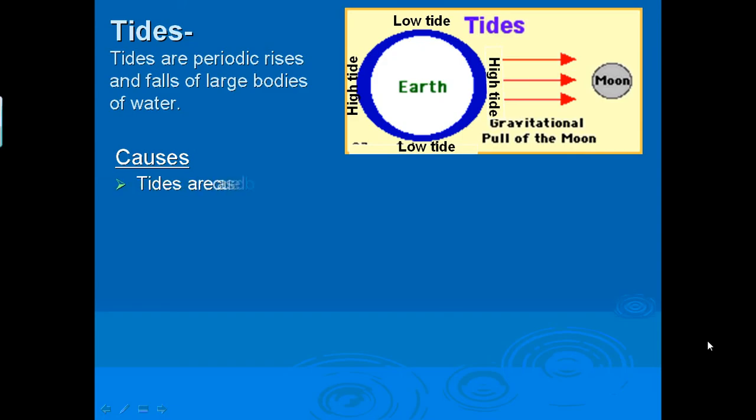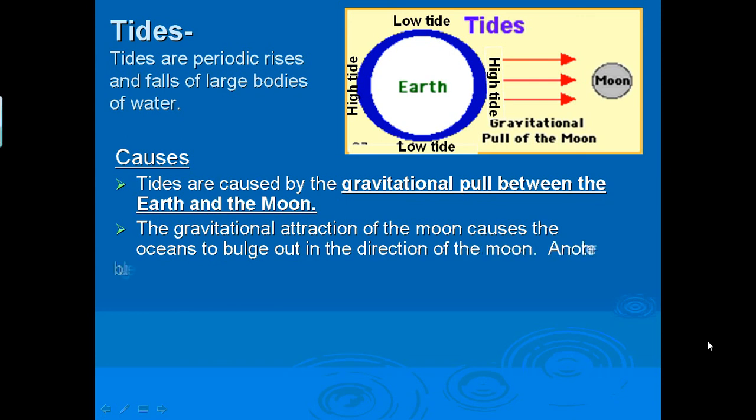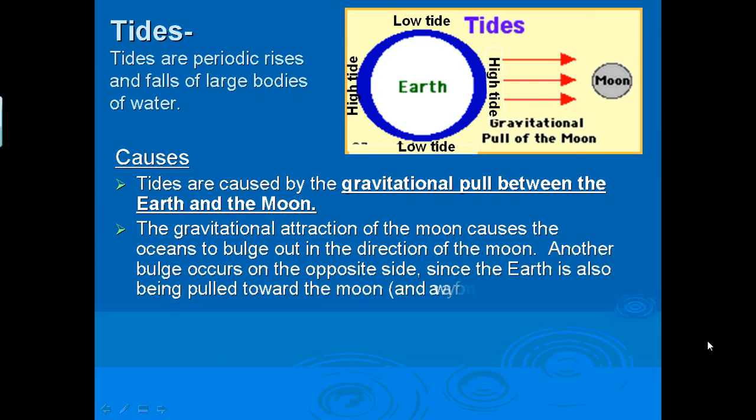How are tides caused? Tides are caused by the gravitational pull between the earth and the moon. This is your explanation. Summarize this part. The gravitational attraction of the moon causes the oceans to bulge out in the direction of the moon.